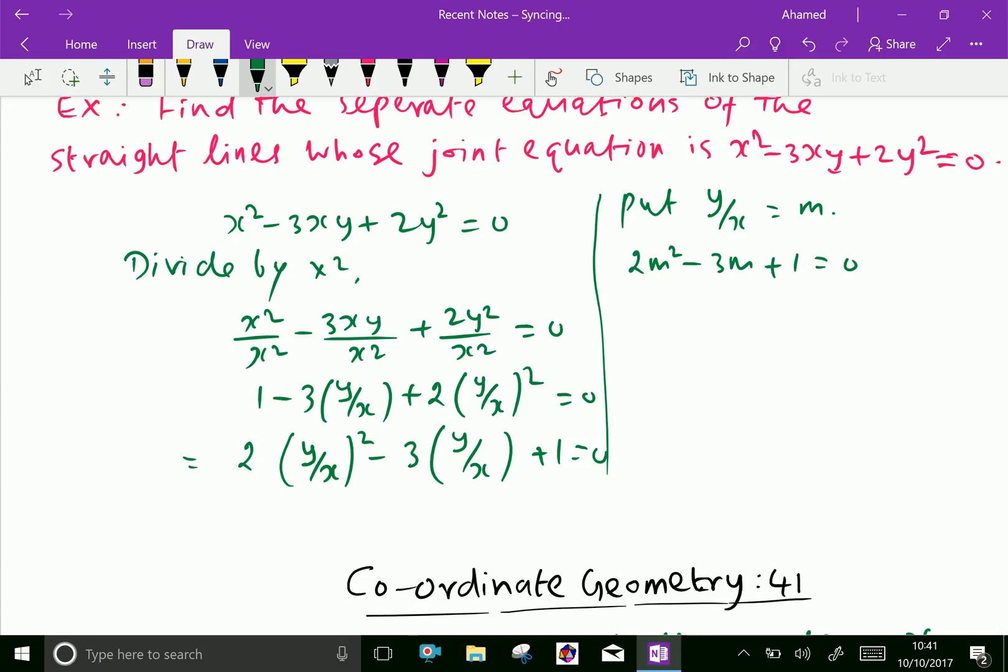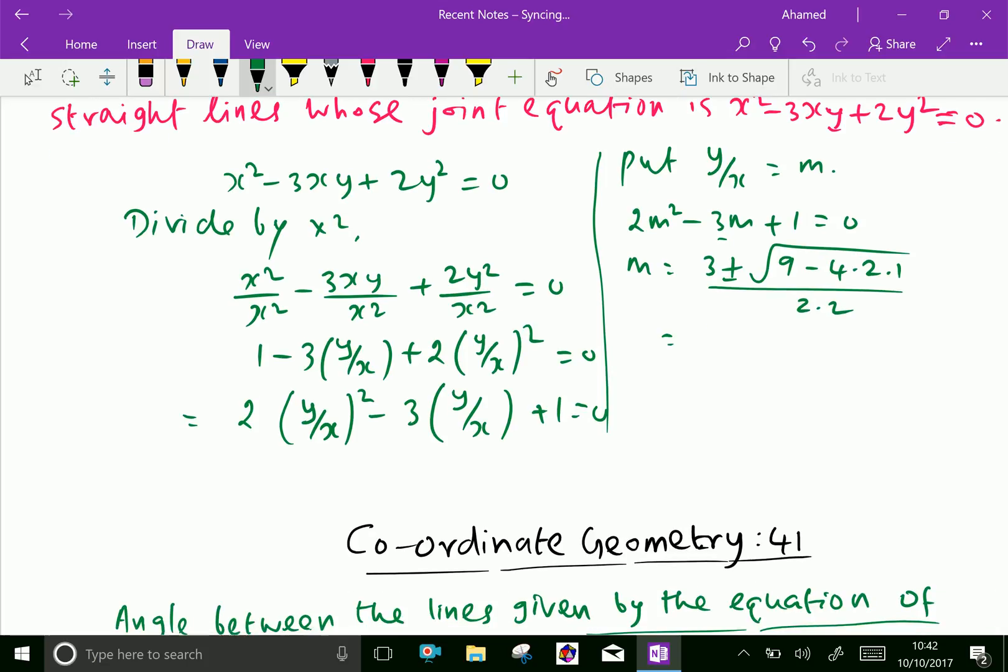By solving, we get m equal minus b, that is 3 plus minus root b squared, that is 9 minus 4ac over 2 into 2, equal 3 plus minus 9 minus 8 over 4, which gives 3 plus minus 1 over 4.